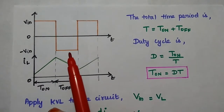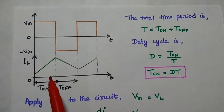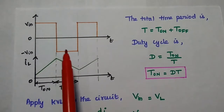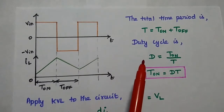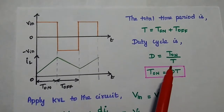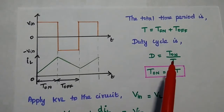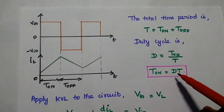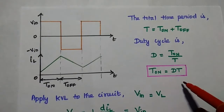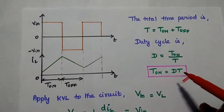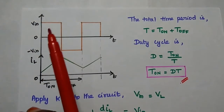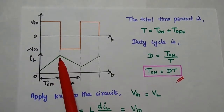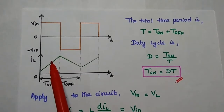The signal diagram shows the input voltage and inductor current with respect to the time period. The total time period is equal to on-time plus off-time. The duty cycle is the ratio of on-time to the overall time period, so D = T_on / T. From this, on-time equals duty cycle times the overall time period. During the on-time, the inductor current increases — meaning the inductor stores energy — and when the switch is OFF it starts releasing the energy.